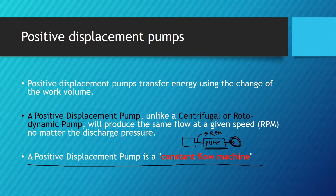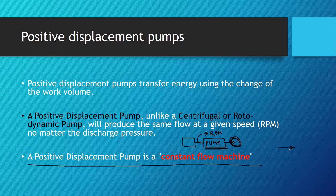One negative aspect of positive displacement pumps is that we always need a safety valve. Why? Because a positive displacement pump operating against a closed discharge valve continues to produce flow until the pressure in the discharge line increases to the point where the line bursts or the pump is severely damaged — or both.